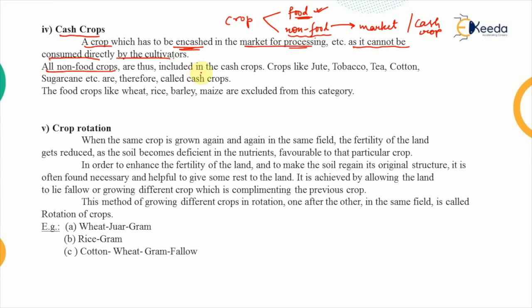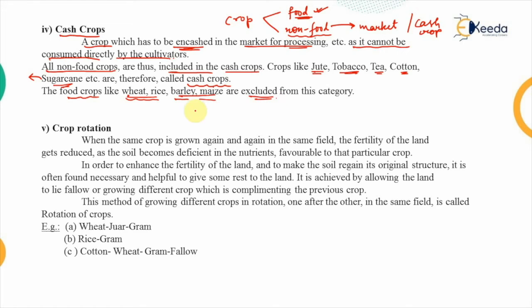All non-food crops are included under cash crops. Examples include jute, tobacco, tea, cotton, and sugarcane — these are cash crops because they cannot be used directly. Tobacco and tea require processing, cotton cannot be used directly from the flower, and sugarcane is supplied to sugar mills for conversion into sugar cubes. Food crops like wheat, rice, barley, and maize — which are directly used by the consumer — are excluded from this category and are non-cash crops.